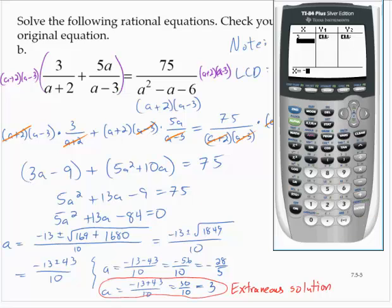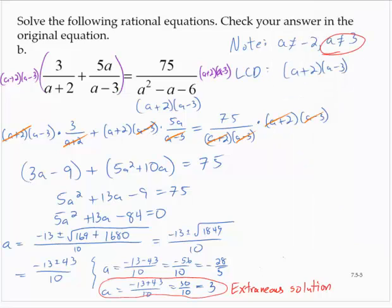If I type in negative 28 over 5, I get 2.42248, et cetera. And I get the same value for both the y1 and the y2. So that tells me that negative 28 fifths is a solution. So my only solution for the equation is a equals negative 28 fifths.